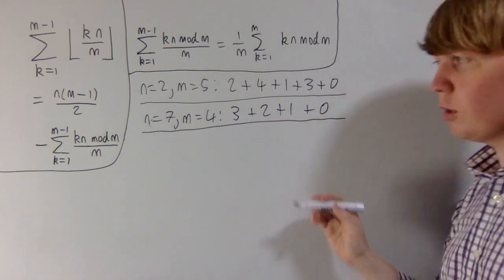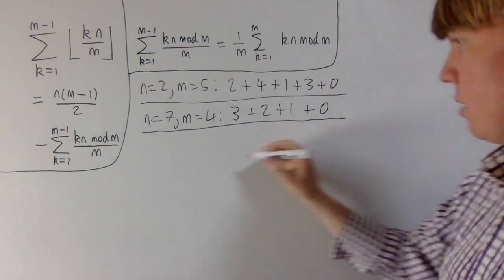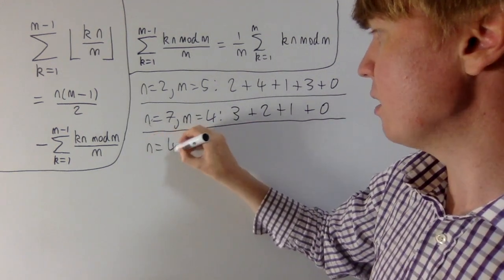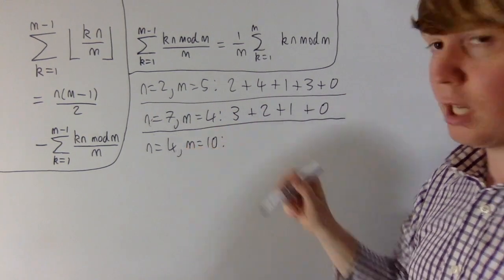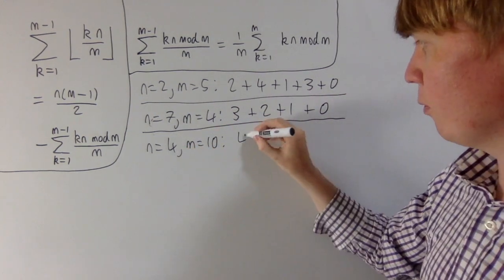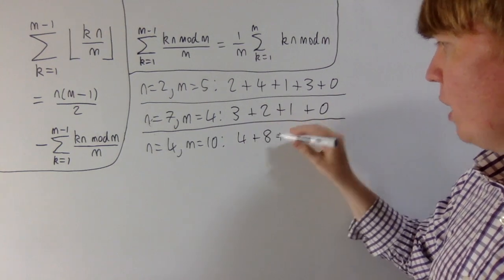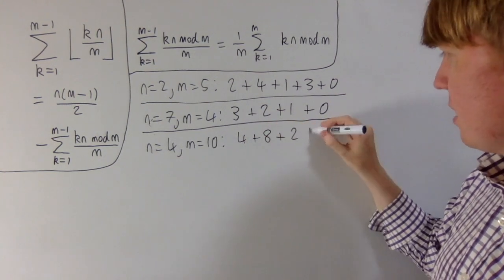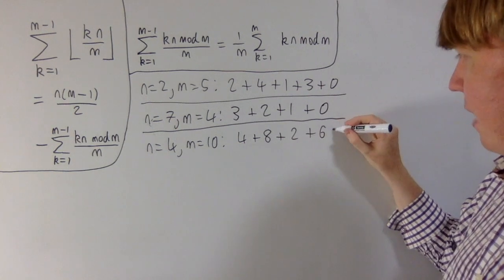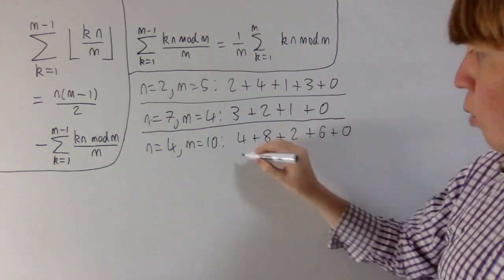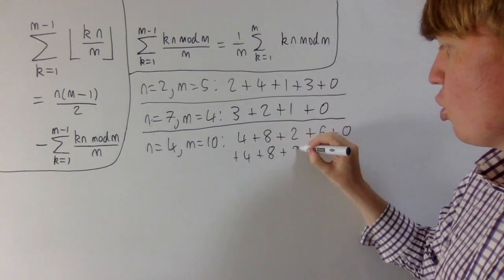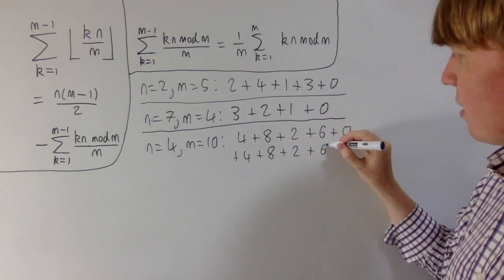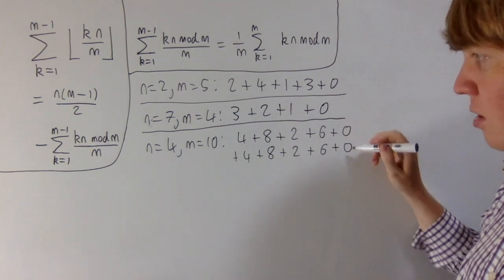We get slightly different behaviour if m and n have common factors. So let's say n is 4 and m is 10. We're going up in our 4 times tables modulo 10. So we have 4 plus 8 plus 12 mod 10 is 2, 16 mod 10 is 6, and 20 mod 10 gives us 0. Then 24 mod 10 takes us back to 4, 28 mod 10 is 8, 32 gives us 2, 36 gives us 6, and finally 40 gives us 0.